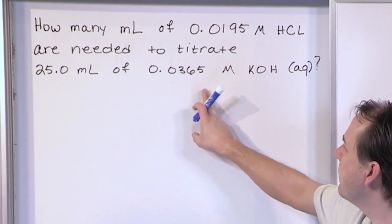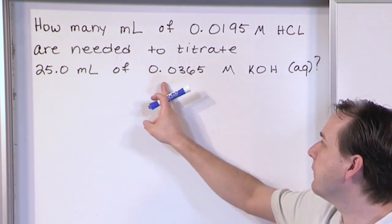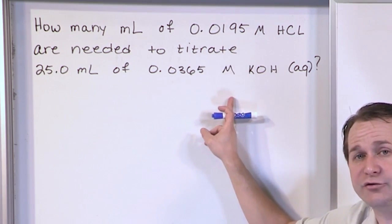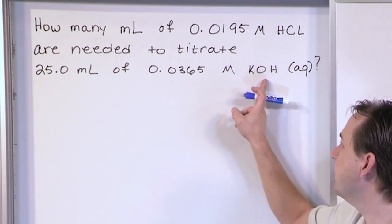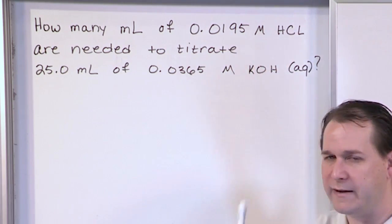0.0365 molar KOH, what you really should be saying to yourself is 0.0365 moles per liter. That's the concentration of this base here. This one here is 0.0195 moles per liter of hydrochloric acid.